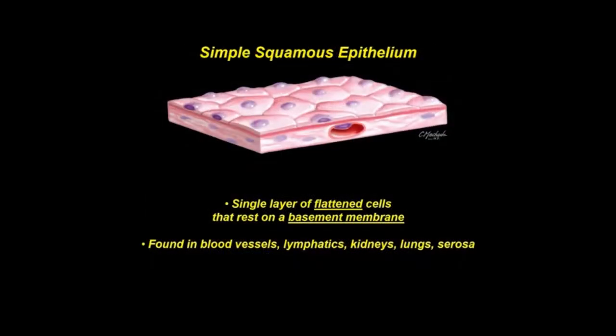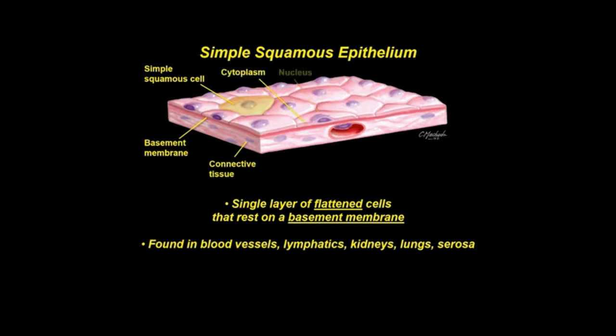Simple squamous epithelium is a single layer of flattened cells resting on a basement membrane and underlying connective tissue. Cells possess a thin cytoplasm and a central nucleus. Names of this epithelium depend on location. Simple squamous epithelium lining the heart, blood vessels, and lymphatics is called endothelium. Mesothelium consists of simple squamous cells forming serous membranes lining body cavities. This distinction is important to pathologists because these cells behave differently in inflammation and tumor formation.